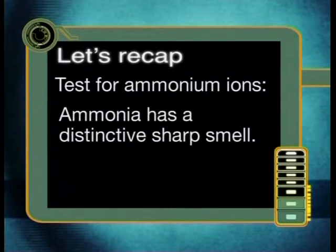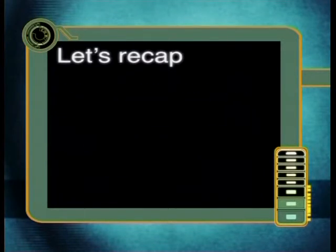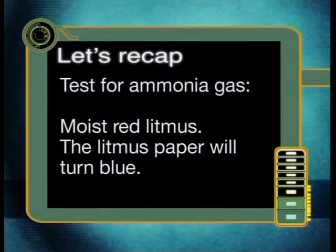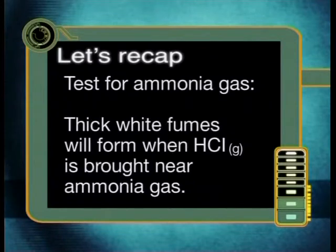First of all, ammonia has a distinctive sharp smell. When calcium hydroxide powder is added to any ammonium salt and heated, large quantities of ammonia gas will be given off. We can test for ammonia gas by using moist red litmus paper, which will turn blue, or using hydrogen chloride gas, where thick white fumes will form when hydrogen chloride gas is brought near ammonia gas. Now let's use these methods to test each of our unknown samples.